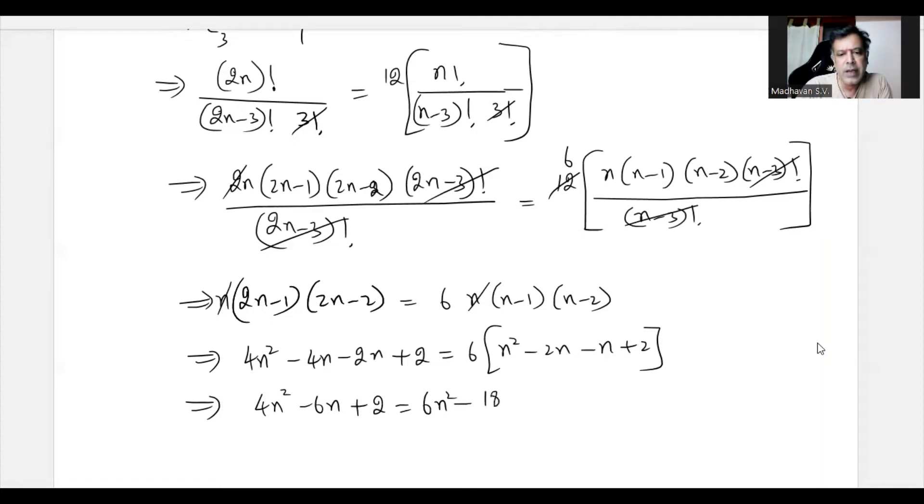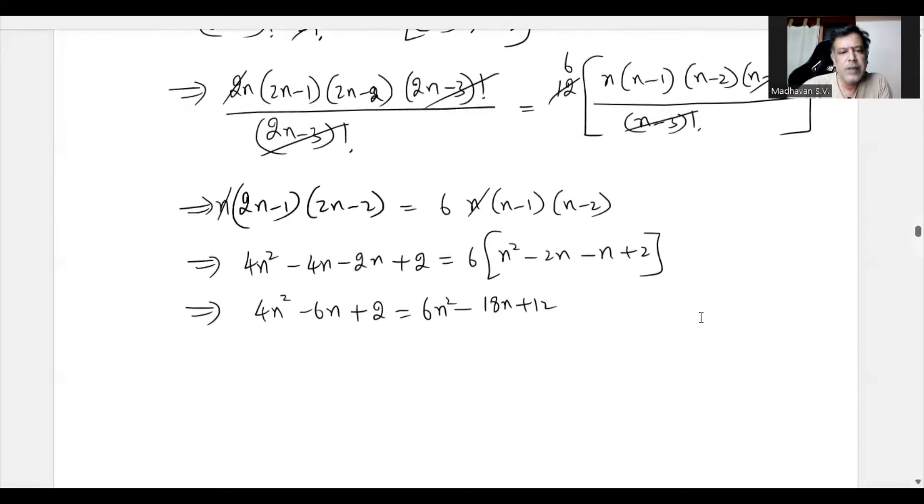Now bringing everything to the right-hand side, we will have 0 is equal to 6N² - 4N² - 18N + 6N + 12 - 2. So that means we have 2N² - 12N + 10 is equal to 0.